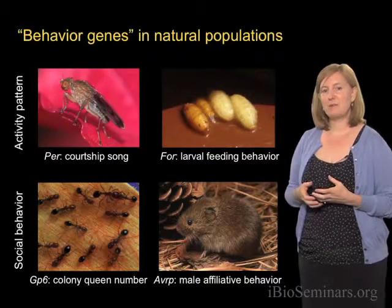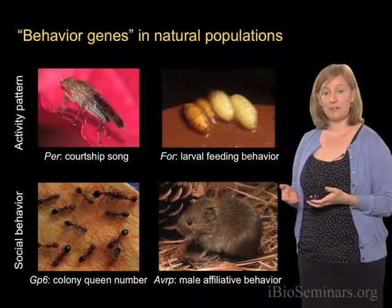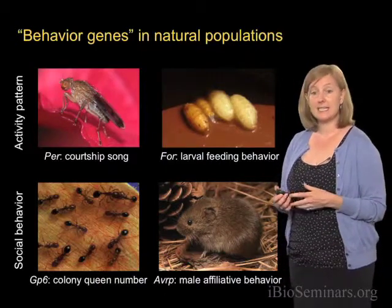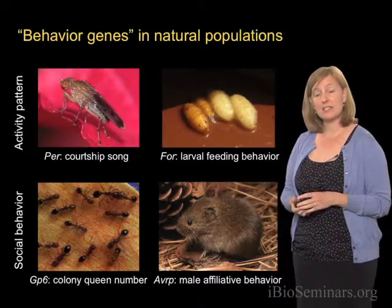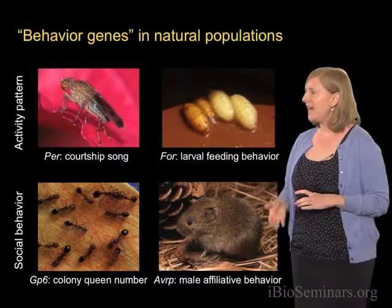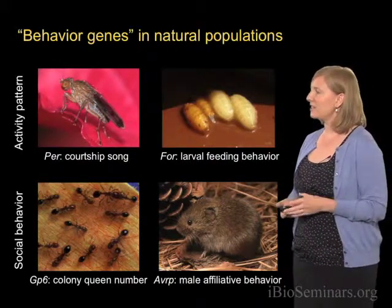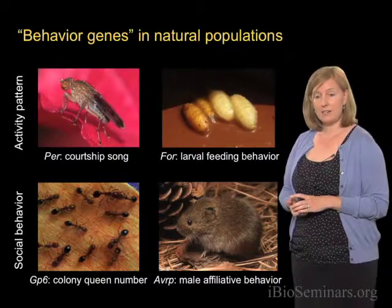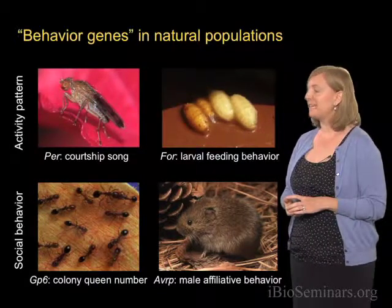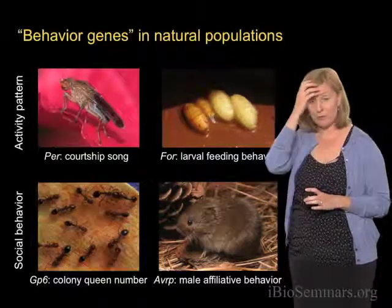There are also a few examples of behavior genes that affect social behavior. Two of my favorites are amino acid changes in the Gp6 locus, which seems to be associated with the number of queens in a colony. And then most recently, gene expression changes in the vasopressin gene seems to affect the affiliative behavior of males in monogamous versus promiscuous voles.